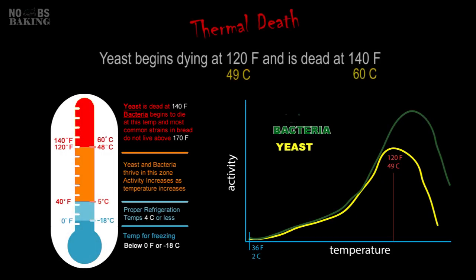Although temperatures will exceed the optimum reproduction window, yeast does not die. As temperatures increase beyond 80°F or 25°C, the available yeast and bacteria go into overdrive, where fermentation really kicks off, producing byproducts until they hit their thermal death point. For this reason, a good final dough temperature in conjunction with a rest period under 80°F produces a nice controlled rise with good reproduction activity.